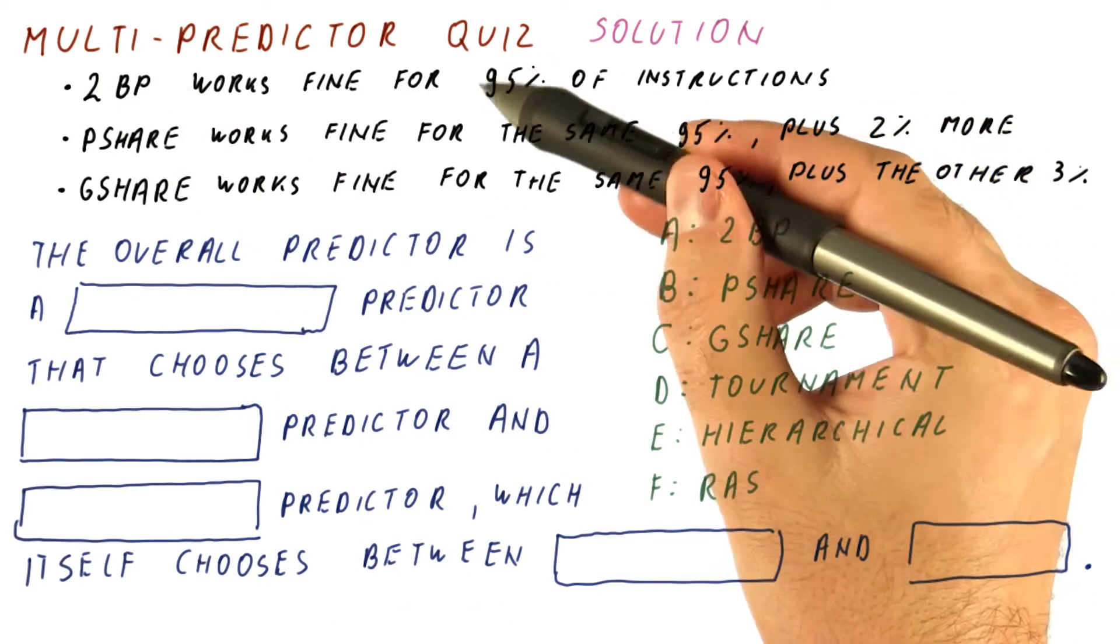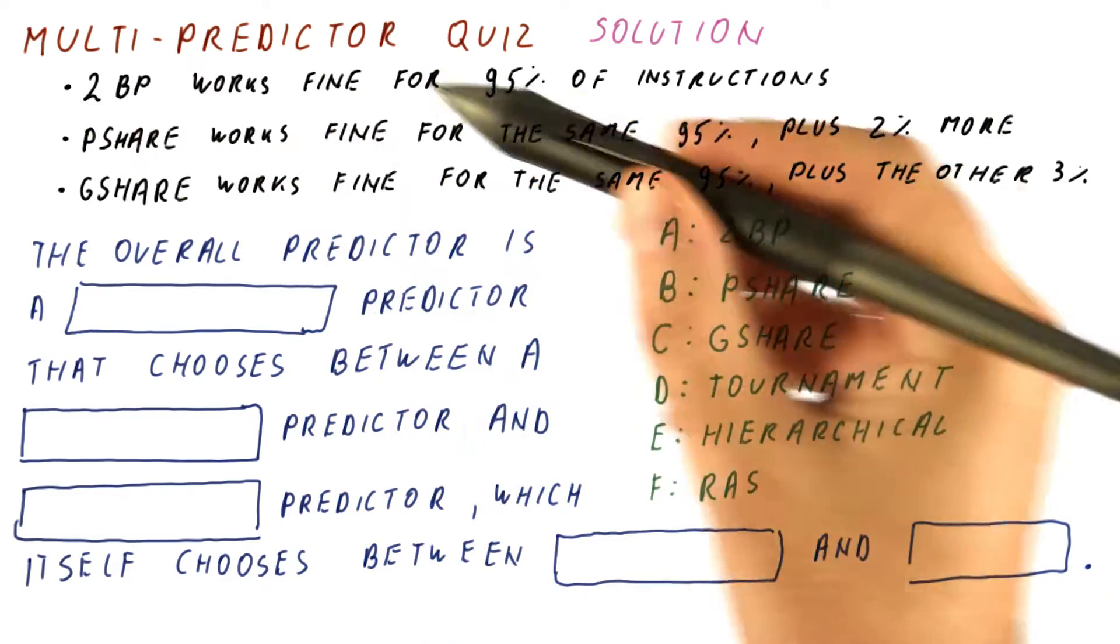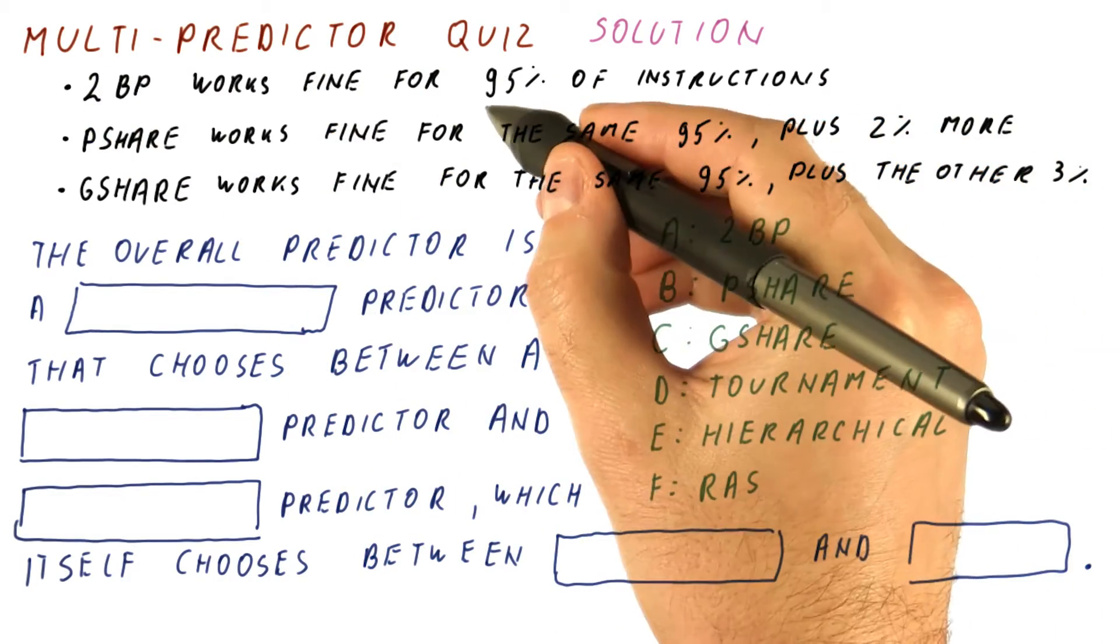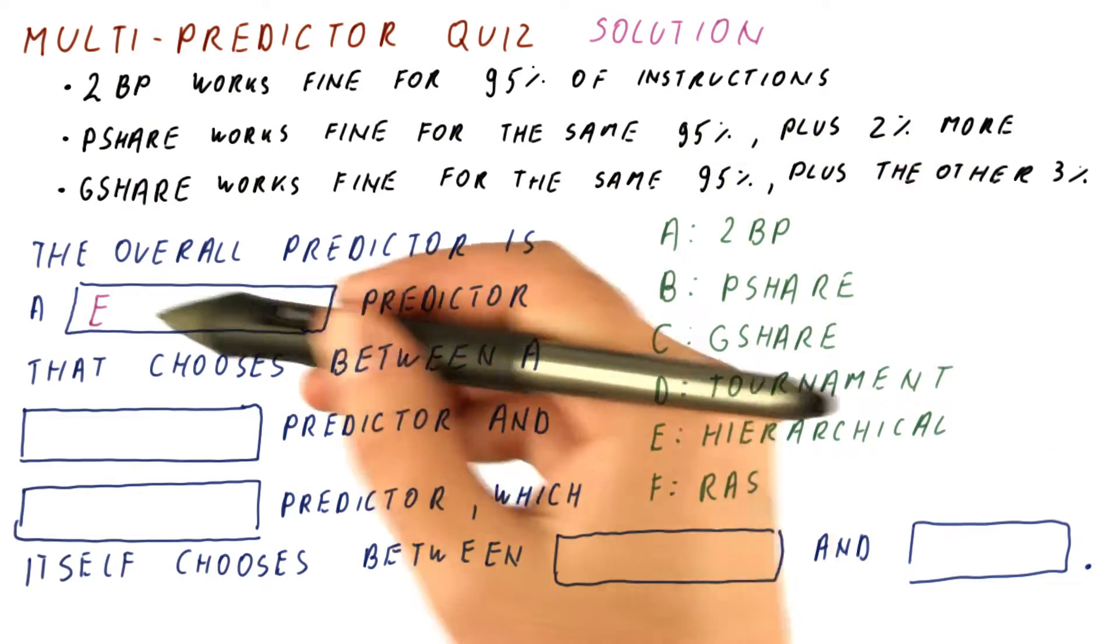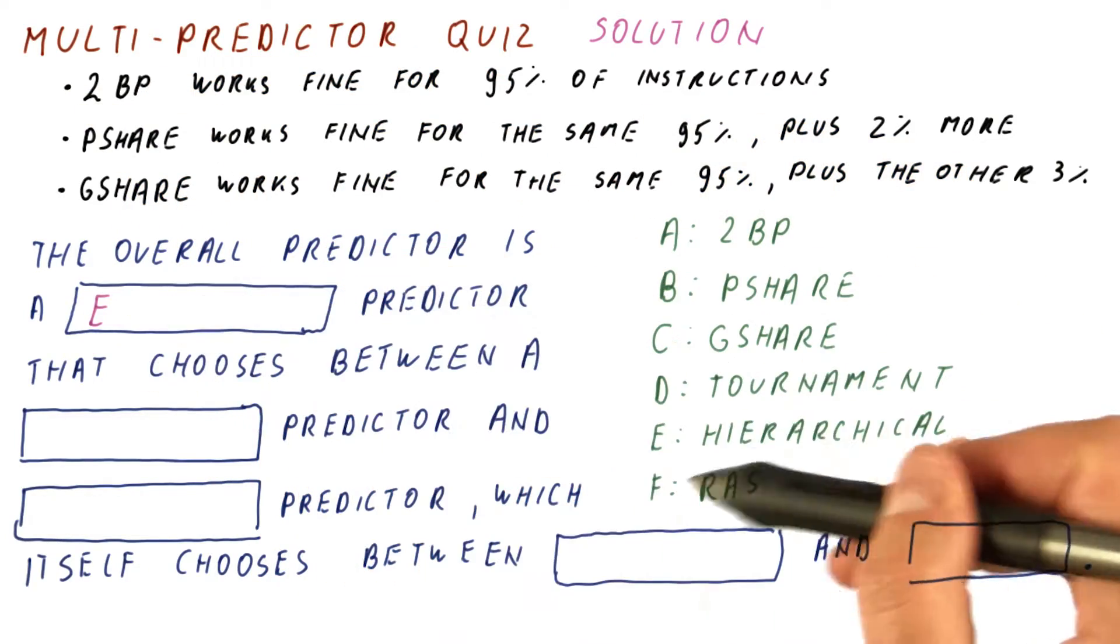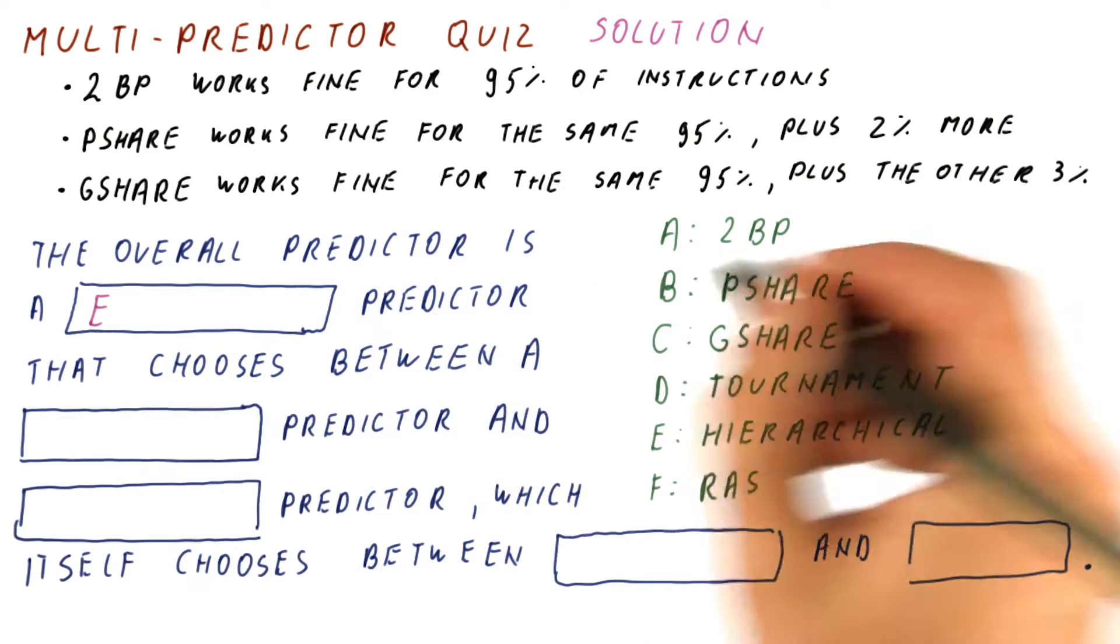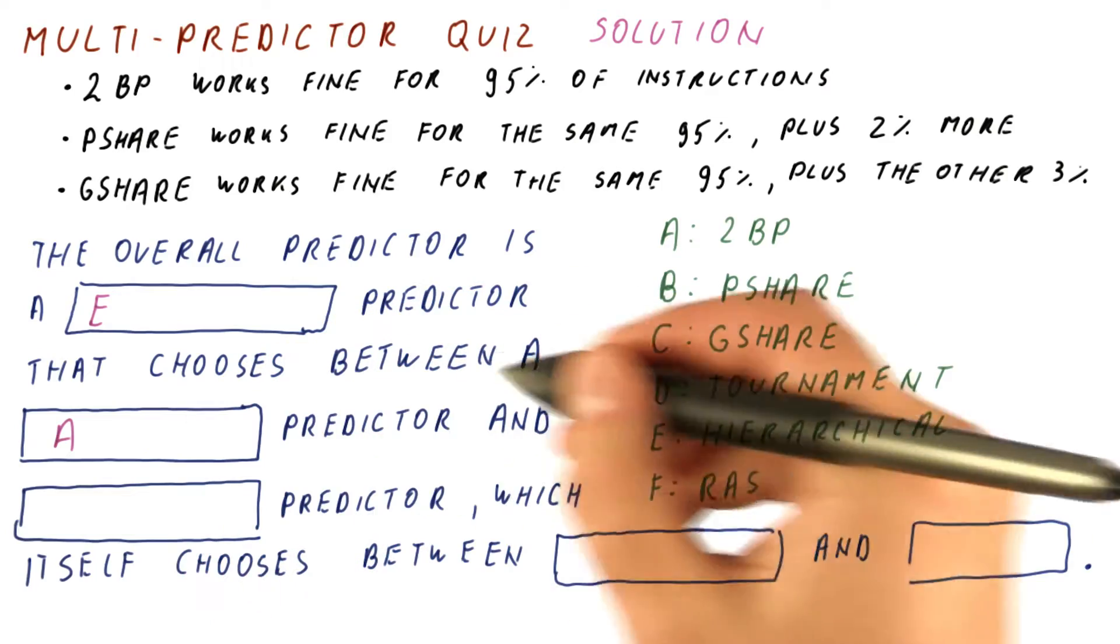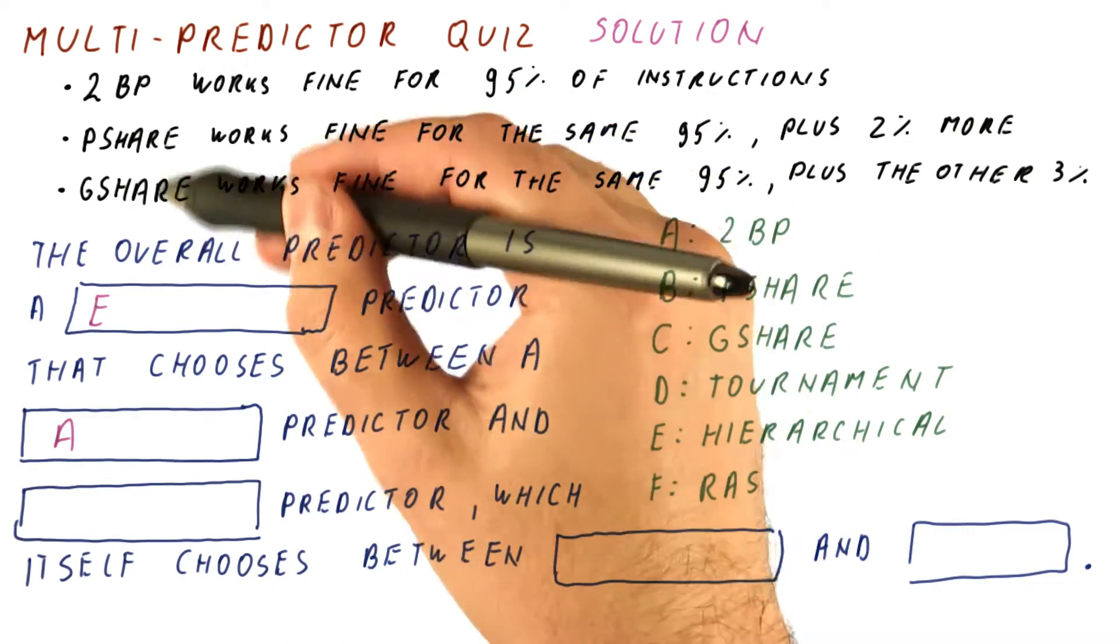Because the two-bit predictor covers the most branches and it's the cheapest predictor, we want to use the two-bit predictor for most of the branches. So the correct answer here is E, hierarchical predictor, that chooses between a two-bit predictor and a predictor that combines the P-share and G-share.